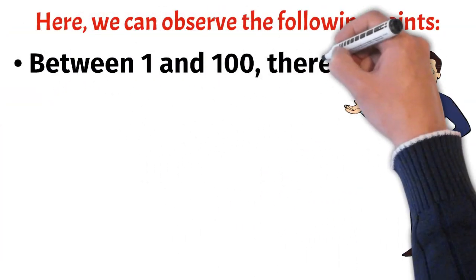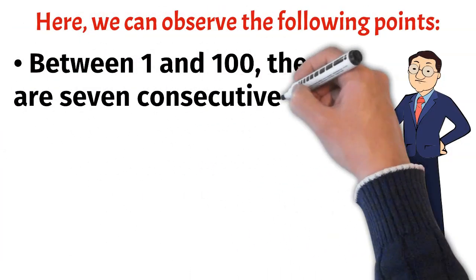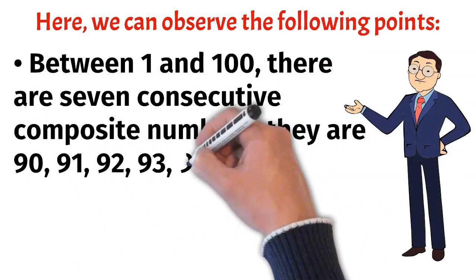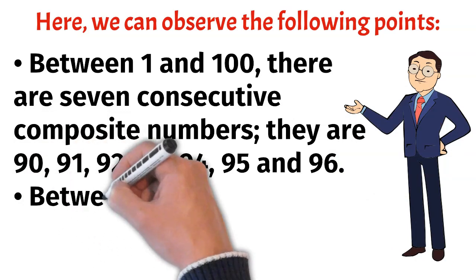Between 1 and 100 there are 7 consecutive composite numbers. They are 90, 91, 92, 93, 94, 95 and 96.